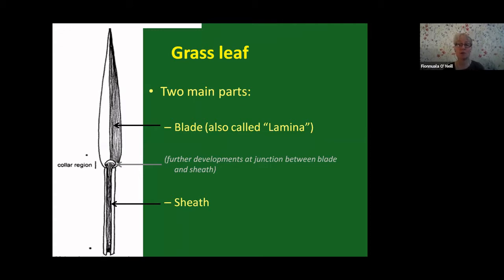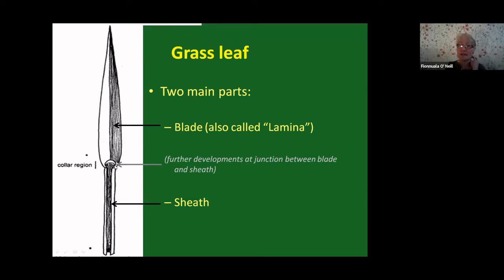The grass leaf, which is probably one of the main parts we use for ID purposes, consists of two main parts: the leaf blade, which in texts is often called the lamina, and the lower part called the sheath, which is wrapped around the stem. At the junction between the leaf blade and the sheath, there are a few other things going on which can also help with identification.